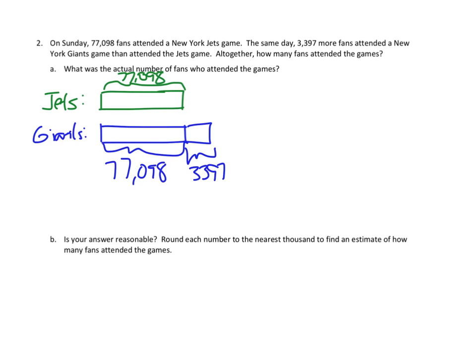And so we first need to figure out how many fans attended the Giants game by adding together these two numbers. And then we're going to figure out the overall total, right? Which is, that's the question that we're really looking at. What is the actual number of fans who attended the games? I'm going to label that with the variable F, which is the total number of fans. So I'm going to go in blue and figure out the Giants first. So that was 77,098 plus 3,397. And we're going to add those two numbers together.